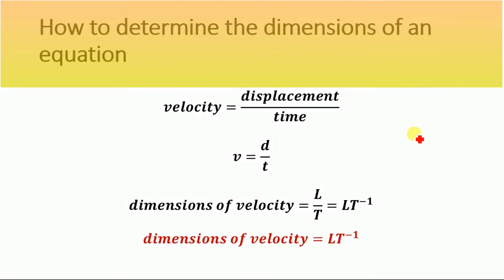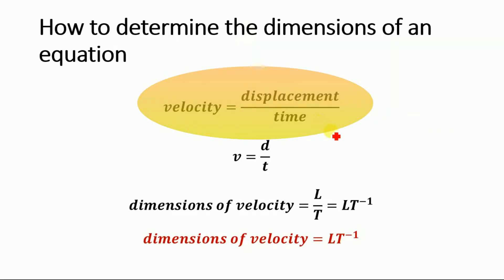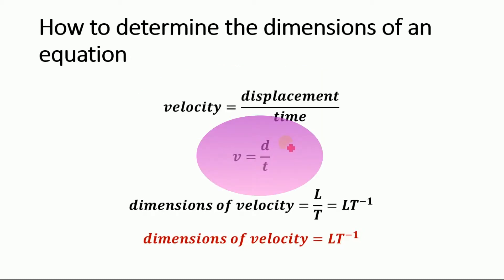It is very simple to determine the dimension of any equation. Let's determine the dimensions of velocity. We know that velocity is equal to displacement divided by time. Mathematically, it can be written as V is equal to D divided by T, where V is velocity, D is the displacement, and T is the time.